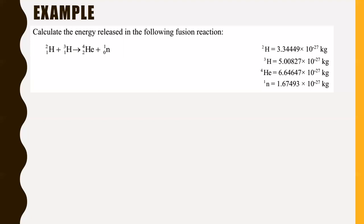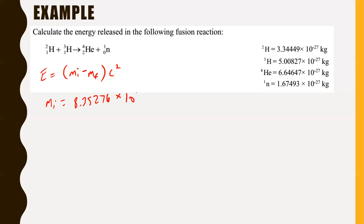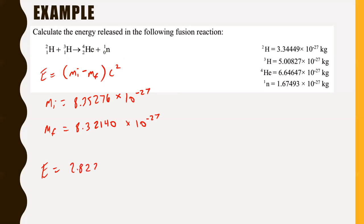Calculate the energy released in the following fusion reaction — deuterium plus tritium. The energy released is E equals the initial mass minus the final mass, times C squared. The initial mass — deuterium plus tritium — is 8.35276 times 10 to the negative 27 kilograms. The final mass — helium plus a neutron — is 8.32140 times 10 to the negative 27 kilograms. The initial mass is greater than the final mass as expected. Therefore the energy released is 2.82240 times 10 to the negative 12 joules.